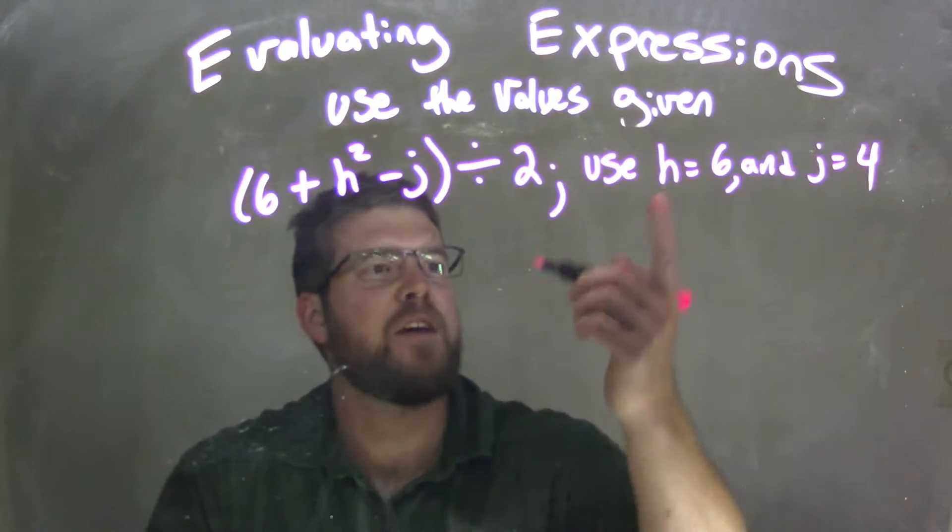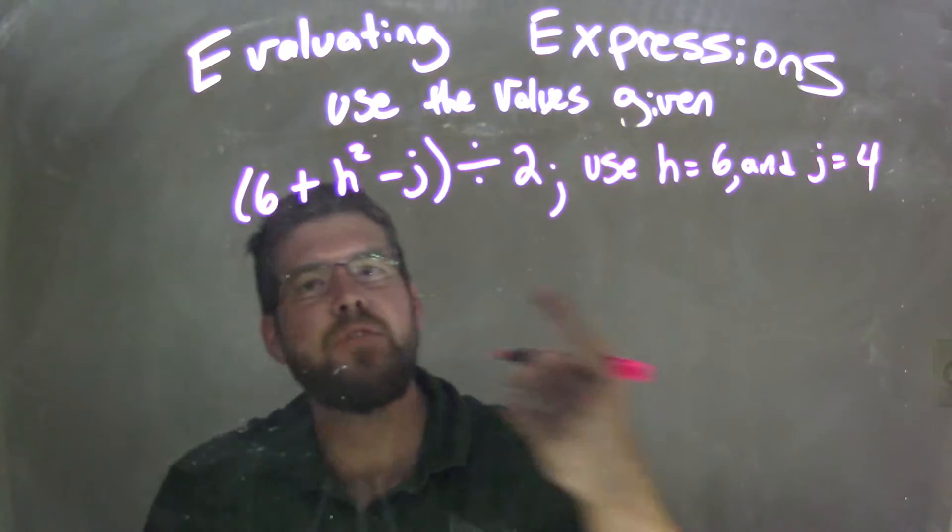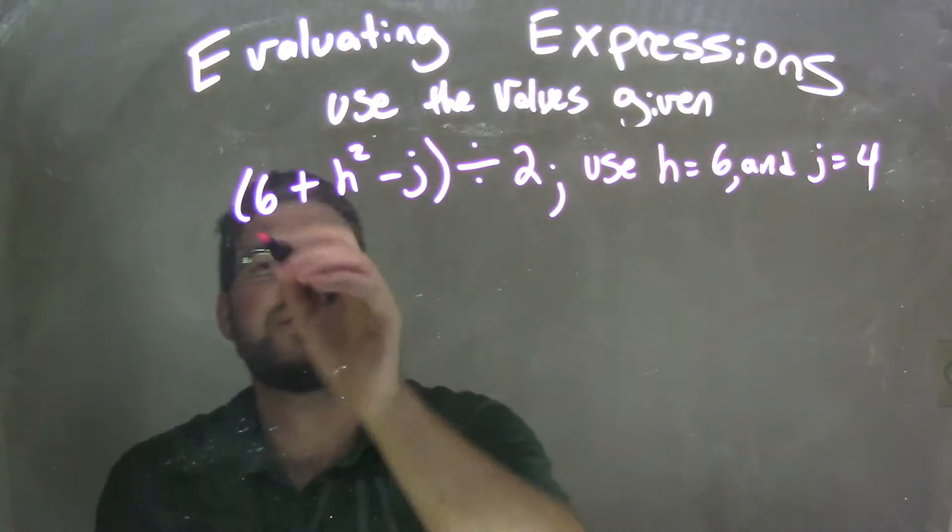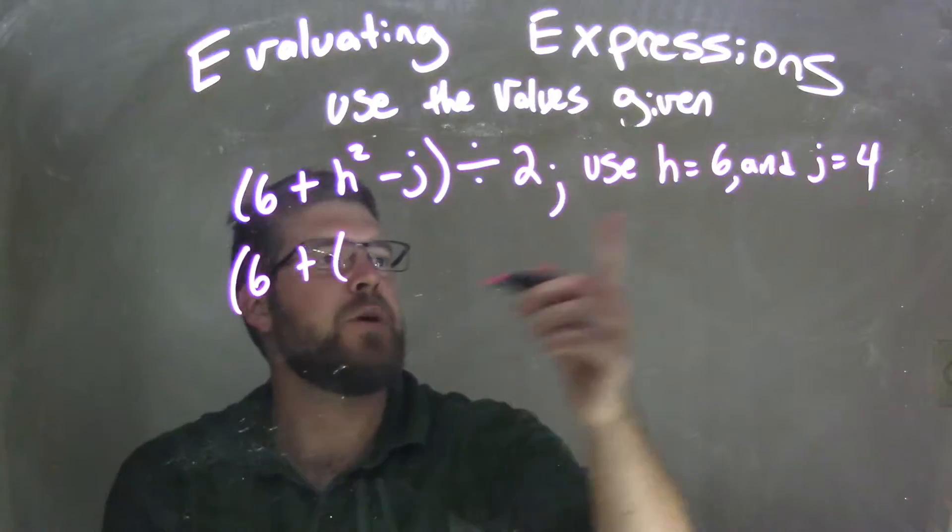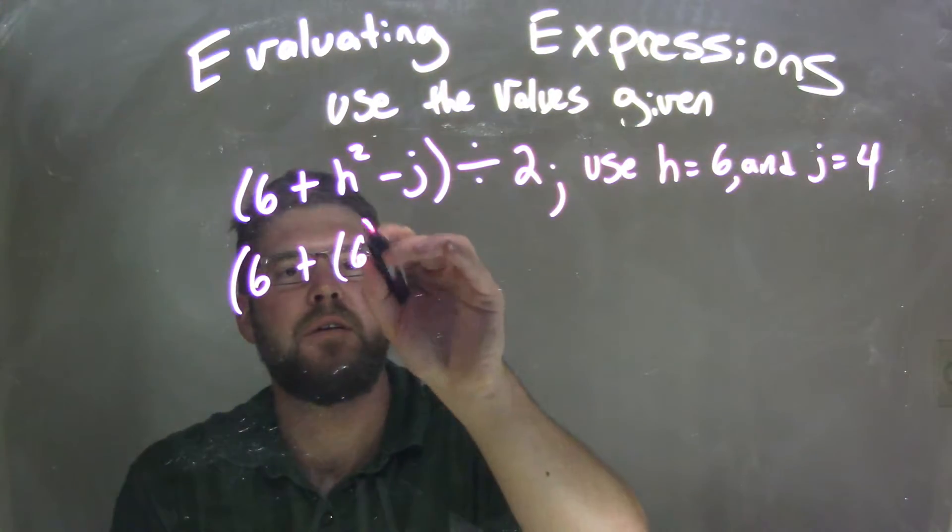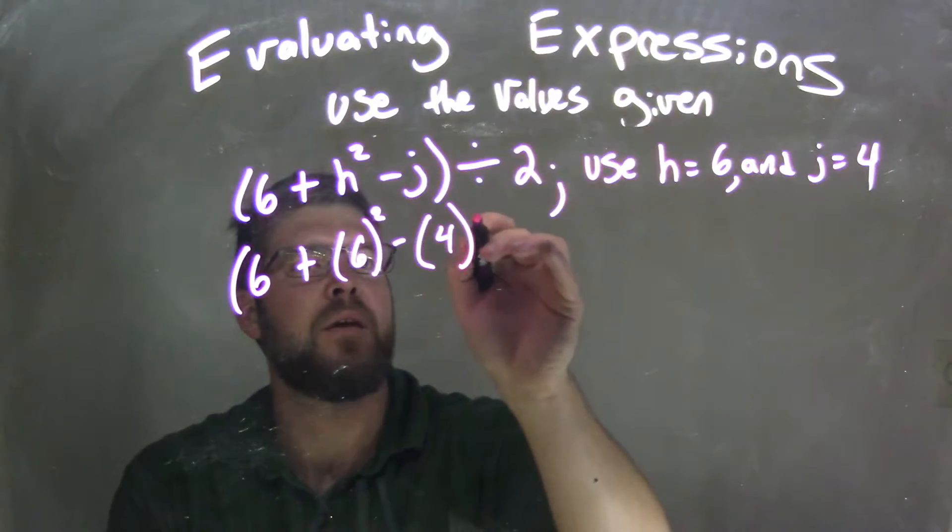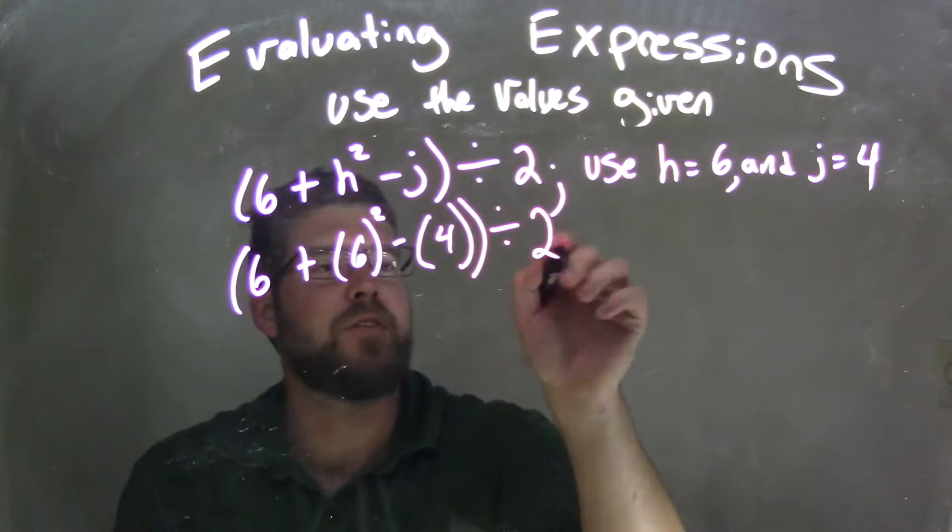So we want to take these variables here and substitute them into the corresponding variables here in our expression. So 6 is by itself, I'm leaving that out here, but h we know to be 6 squared minus j in this case, which is 4 divided by 2.